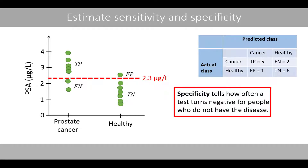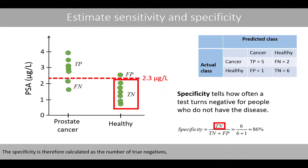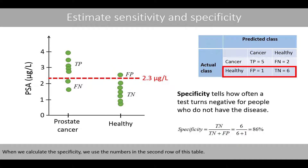Specificity tells how often a test turns negative for people who do not have the disease. Since 6 out of the 7 healthy controls are below the cut-off line, the specificity is 6 over 7, or 86%. The specificity is therefore calculated as the number of true negatives divided by the total number that actually are healthy. When we calculate the specificity, we use the numbers in the second row of this table.